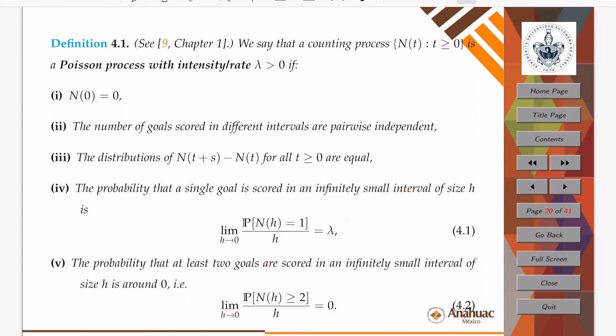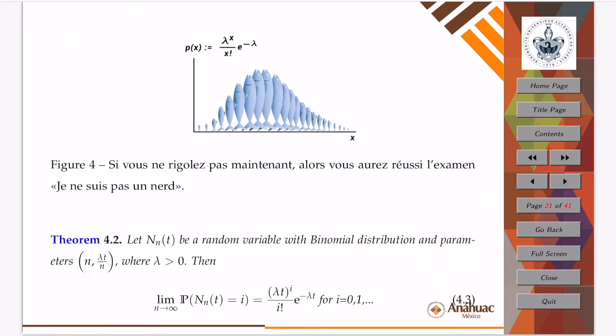It just looks the same as a binomial counting process, but it has these special features. The first one says that if we have a really small time interval, then the probability of seeing a goal is proportional to this special number, which in our case will be the average of goals during a match. And it says that the probability that at least two goals are scored in an infinitely small interval of time is about zero.